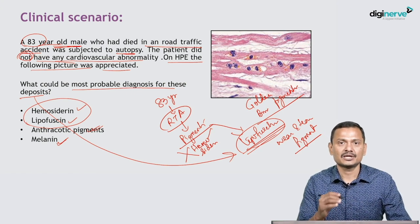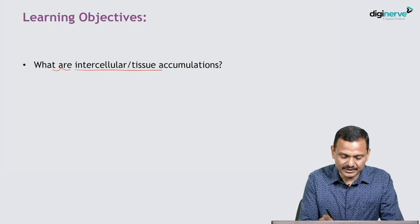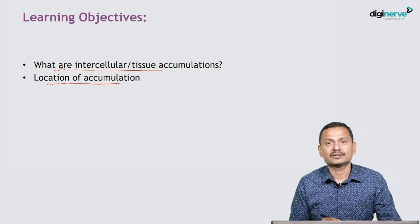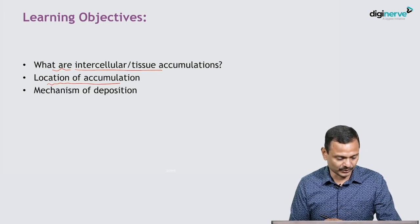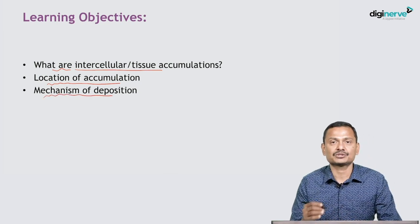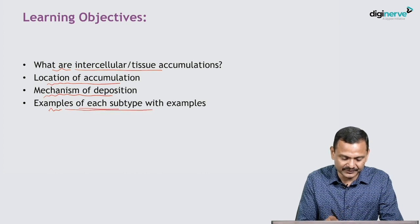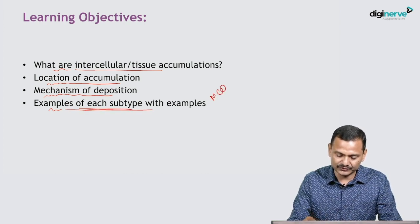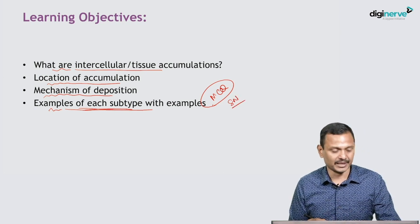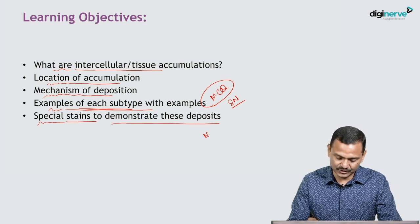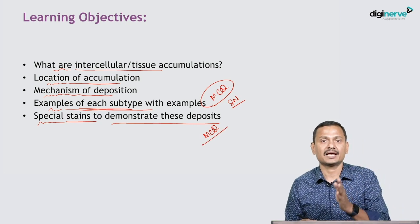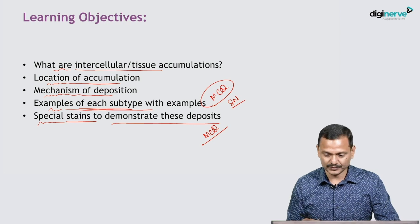We have taken up three clinical scenarios to set up this discussion. Now we will move on to our learning objectives. First, what are intracellular accumulations? Then we will know the location — accumulations can be nuclear, cytoplasmic, or extracellular. Then the mechanism of deposition. Then examples of each subtype, which is very important because you get a lot of MCQs or short notes in relation to different subtypes of deposition. Finally, we will see some special stains used to demonstrate these deposits — also very common for MCQs.